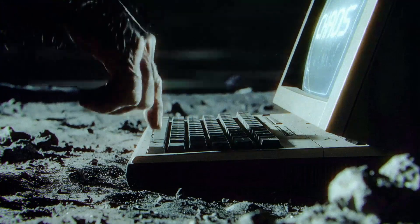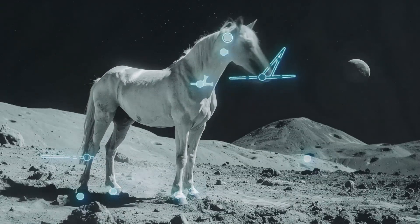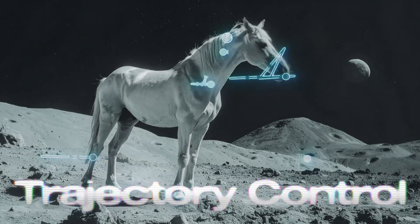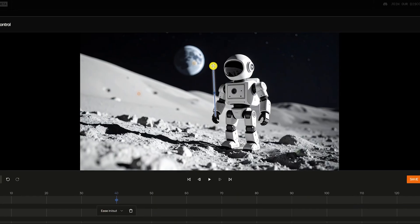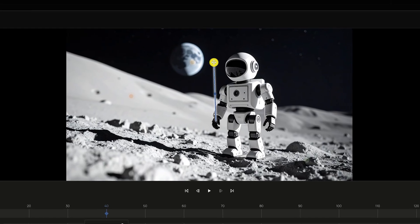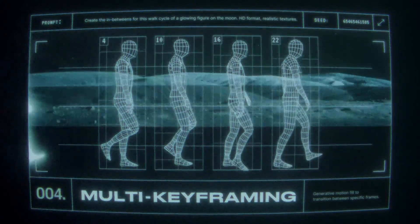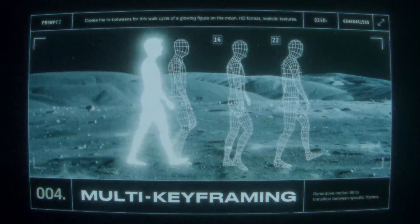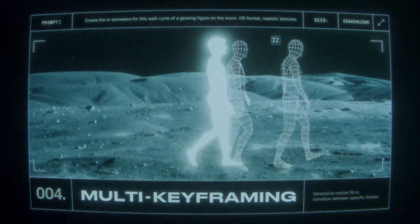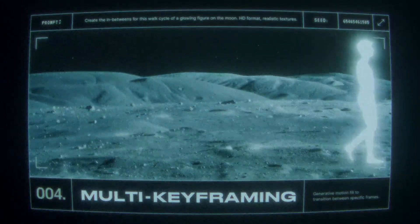Tired of prompting and praying to get the right motion in your AI videos? With Trajectory Control, Mary lets you sketch it. Literally. Mary is Moon Valley's next-gen AI video tool built with studio-grade quality, frame-perfect control, and trained on licensed data.